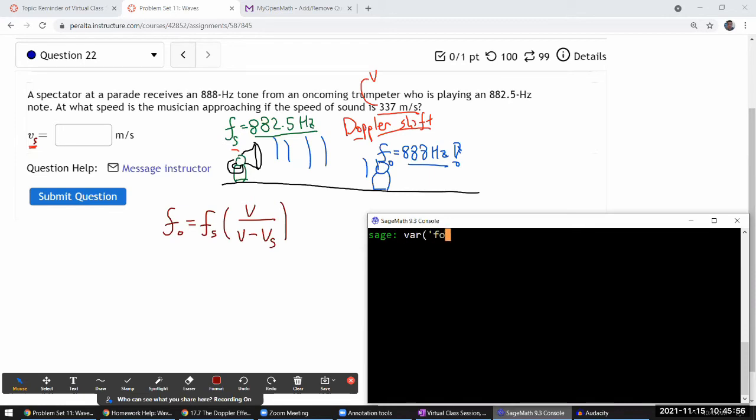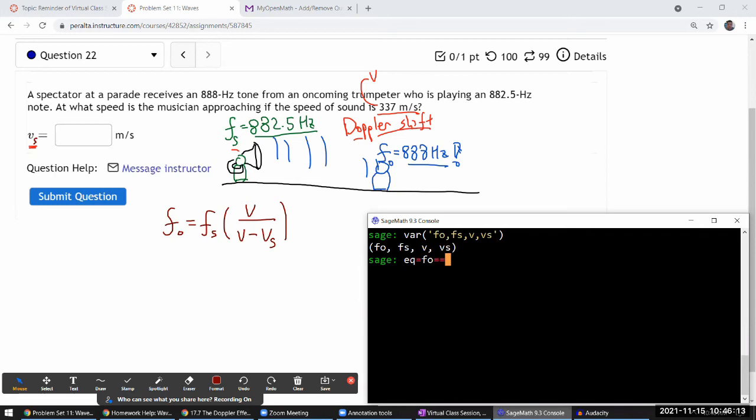Let me declare the variables: observed frequency, source frequency, speed of sound, and speed of the source. Those are the symbols I need. And the equation, I would say, is my observed frequency is equal to this meaning of the, this is an assignment symbol. I'm assigning what I have on the right hand side to the variable EQ. And what I have on the right hand side will be a statement that observed frequency is equal to, that's the equal to symbol in SageMath. So we have source frequency times V divided by V minus Vs.